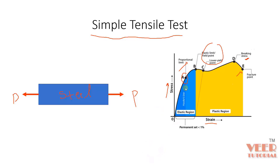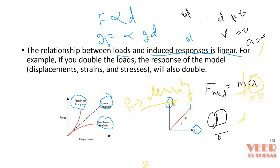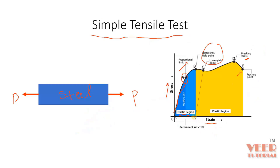In linear static analysis, we consider the curve only up to the proportionality limit — that is, the straight-line region. This region is where Hooke's Law is valid and the elastic limit applies. When we perform linear analysis, we insert all material properties up to this proportional limit. For nonlinear analysis, we go beyond this region because after point A, the curve is no longer linear.